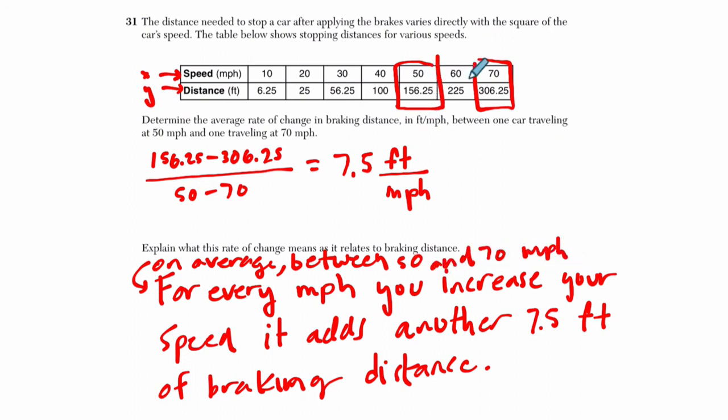You want to specify that we're dealing with this range right here. We don't know what happens at 1,000 miles an hour. We don't know what happens between 10 and 20, how different it is. We just know, on average, between 50 and 70 miles per hour, for every mile per hour you increase your speed, it adds another 7.5 feet of braking distance.